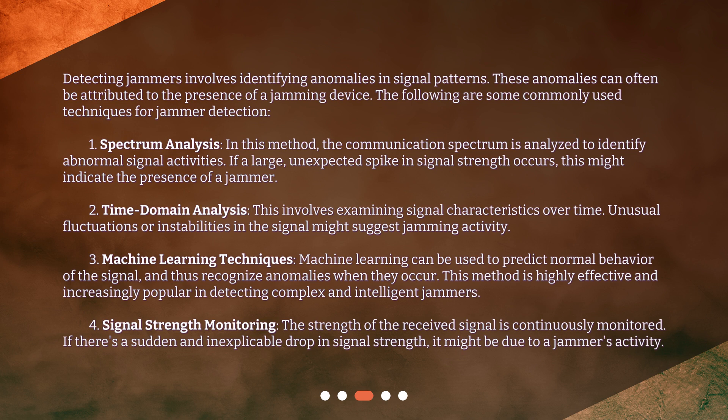3. Machine learning techniques. Machine learning can be used to predict normal behavior of the signal, and thus recognize anomalies when they occur. This method is highly effective and increasingly popular in detecting complex and intelligent jammers.